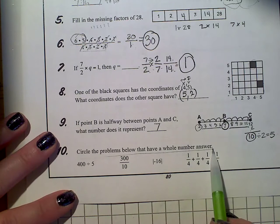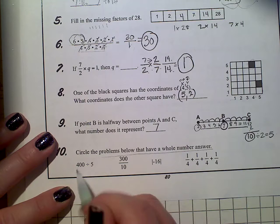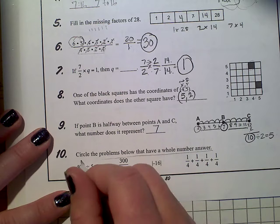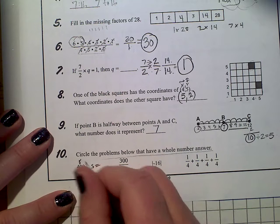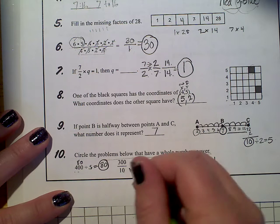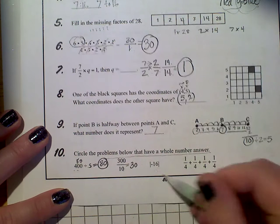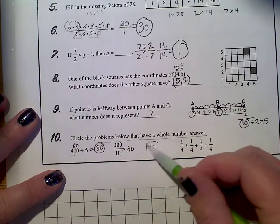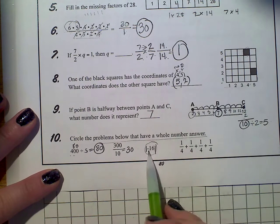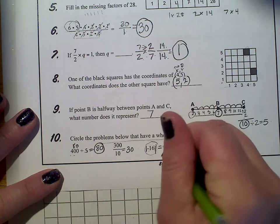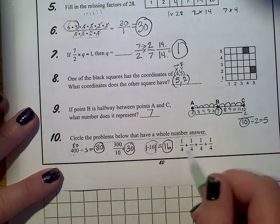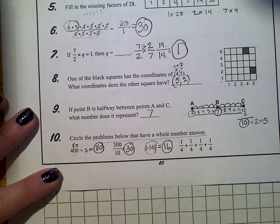Circle the problems below that have a whole number answer. So we're just going to divide them. If you have $400 and you split it with 5 people, you would get 4 goes into, 5 goes into 40, 8 times with your zero. So that would be 80. If you have $300 and you split it with 10 people, you each get $30. This symbol is the absolute value. So the absolute value is the distance between that number and zero. If I have negative 16, the absolute value of negative 16 is just equal to 16. So a whole number, a whole number, a whole number, and now we have some fractions. So far, all of them are whole numbers.